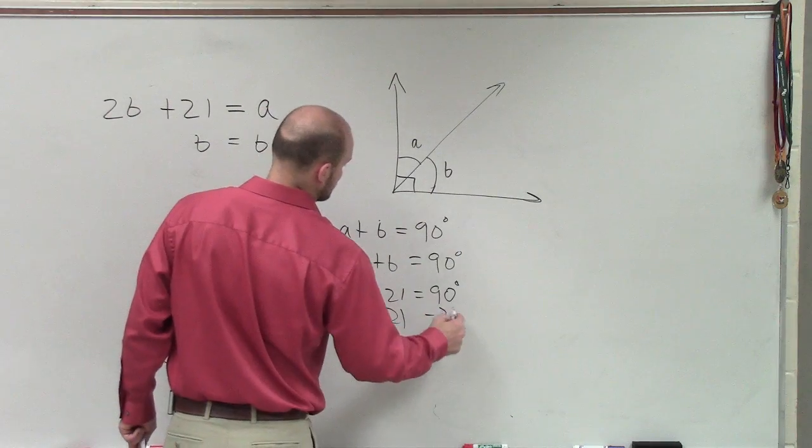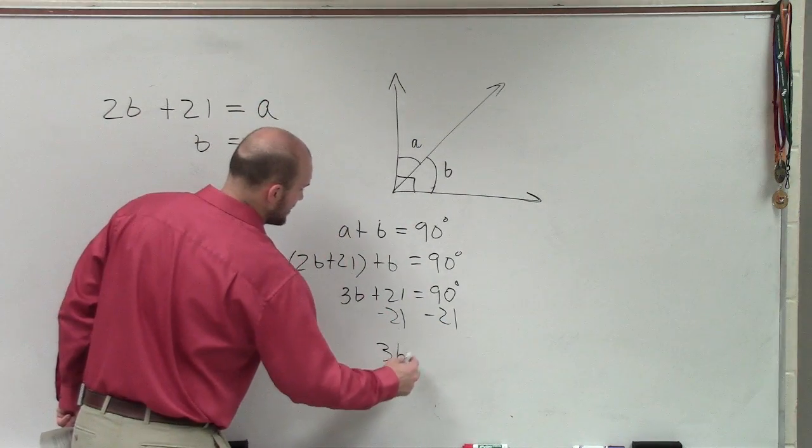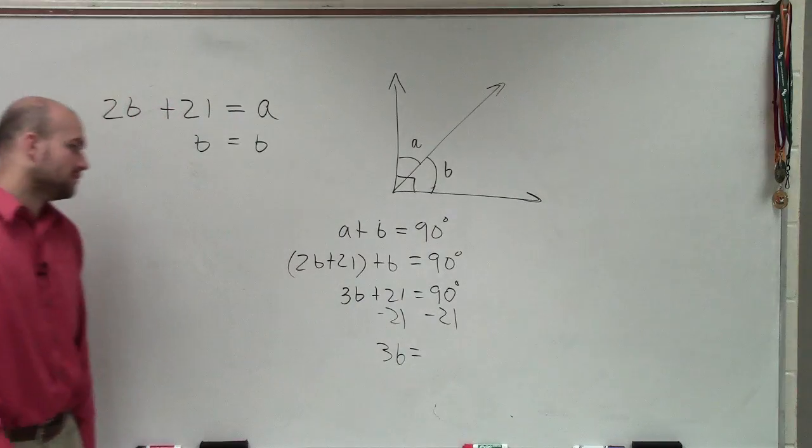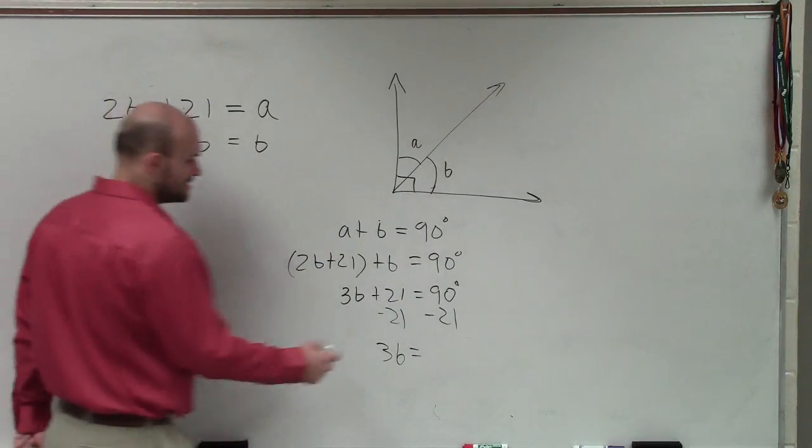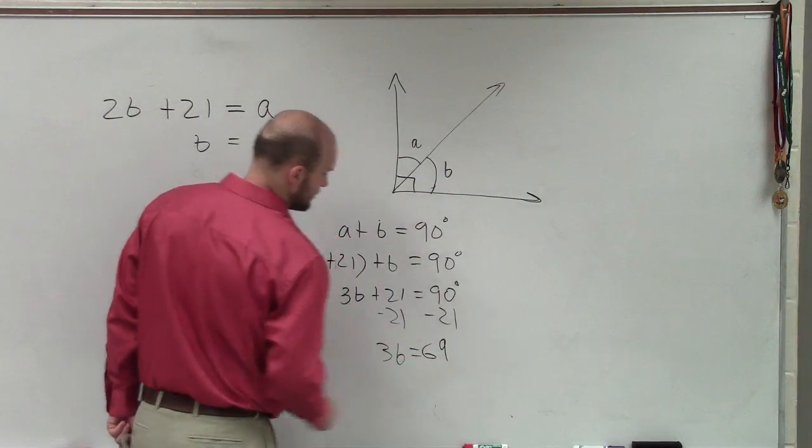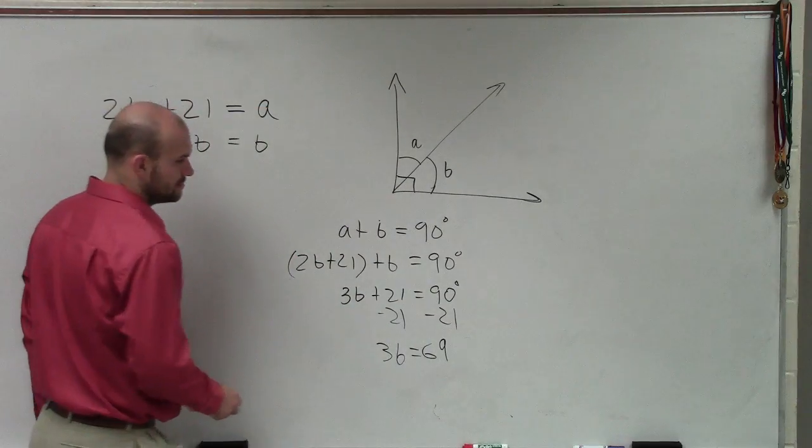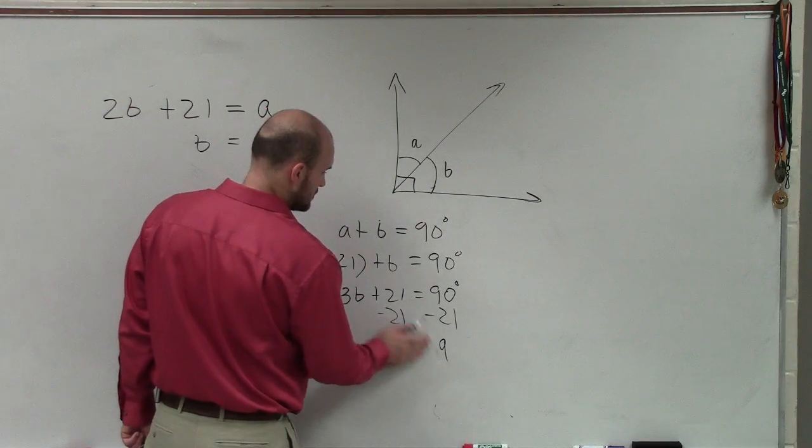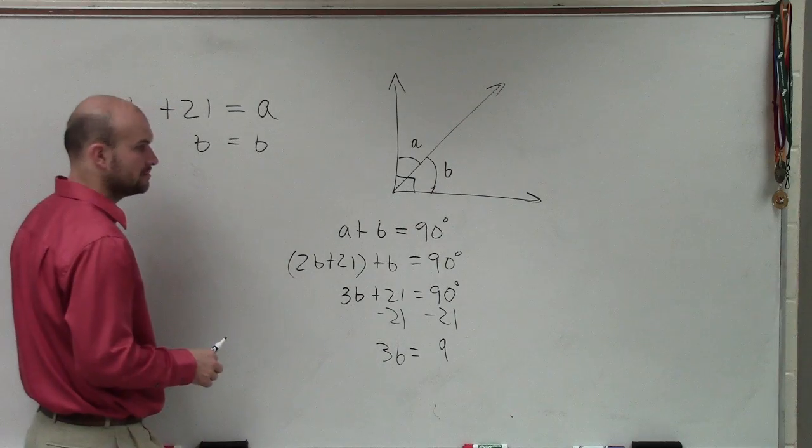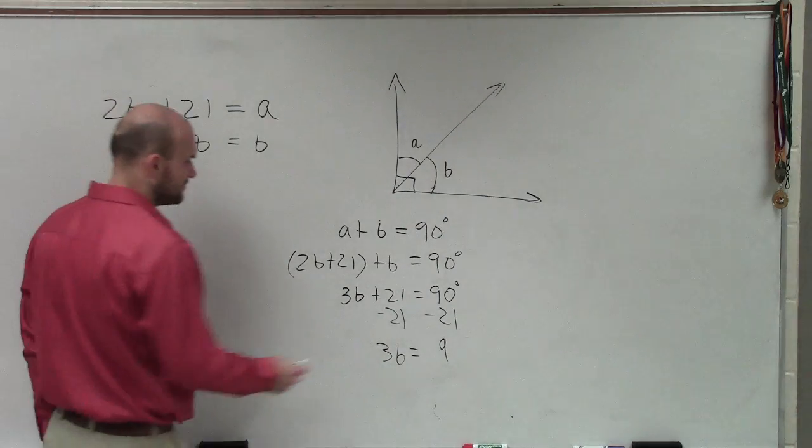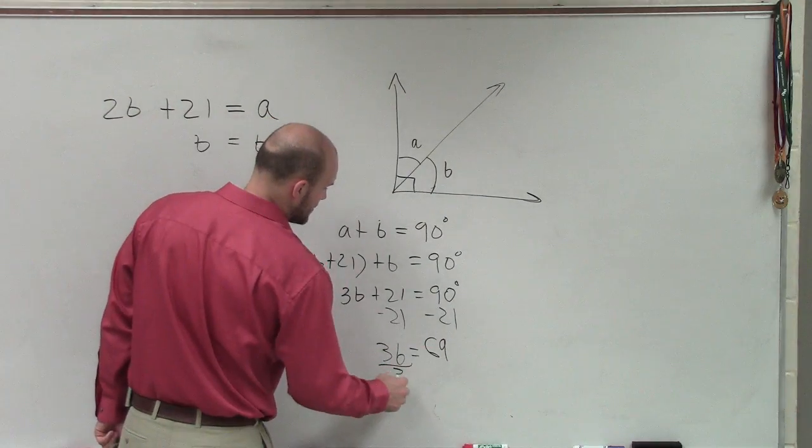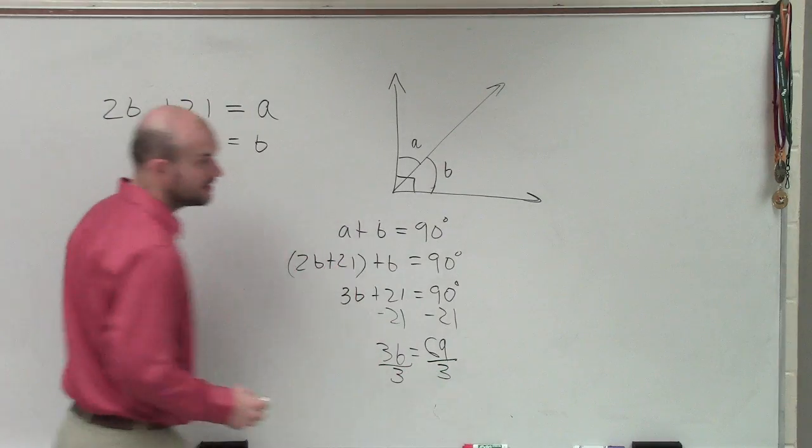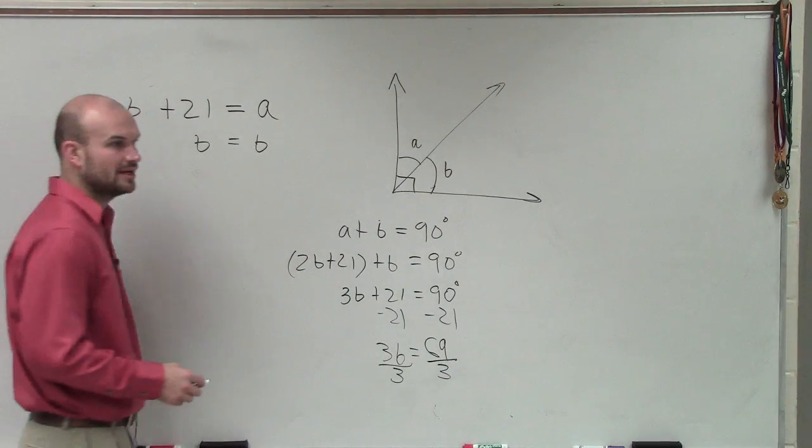Subtract 21. And therefore, you have 3B equals, we see that would be 69. No. 79, 80. 70, 80. Yeah, 69. Divide by 3. Divide by 3.